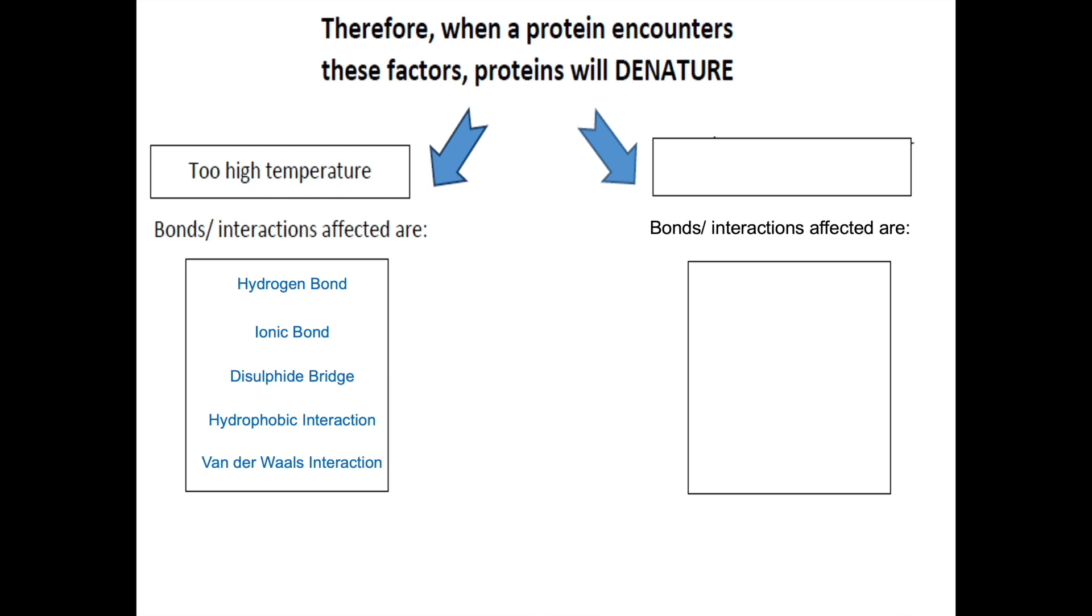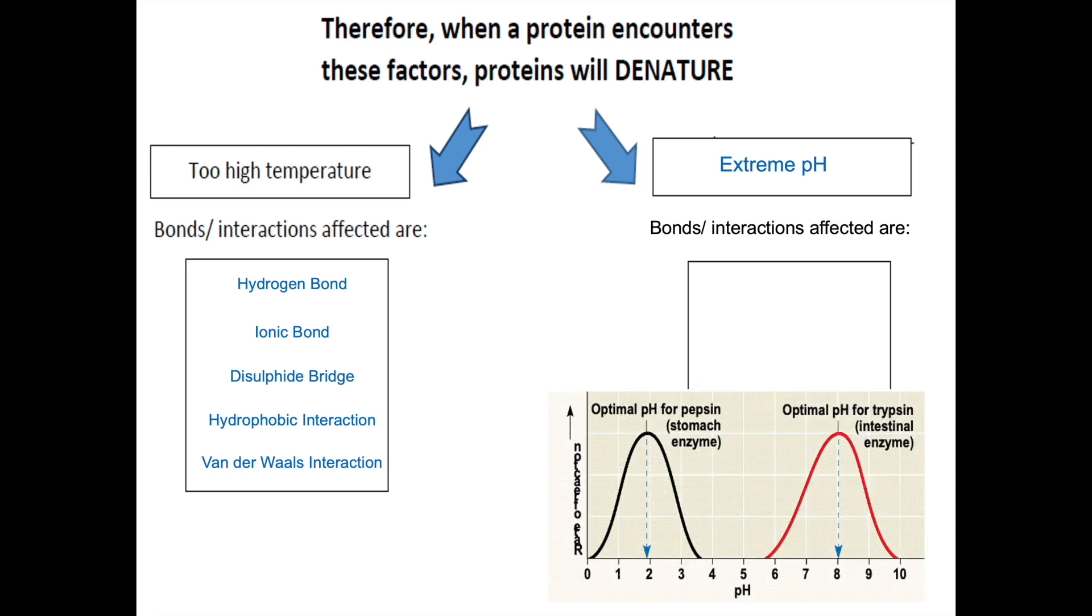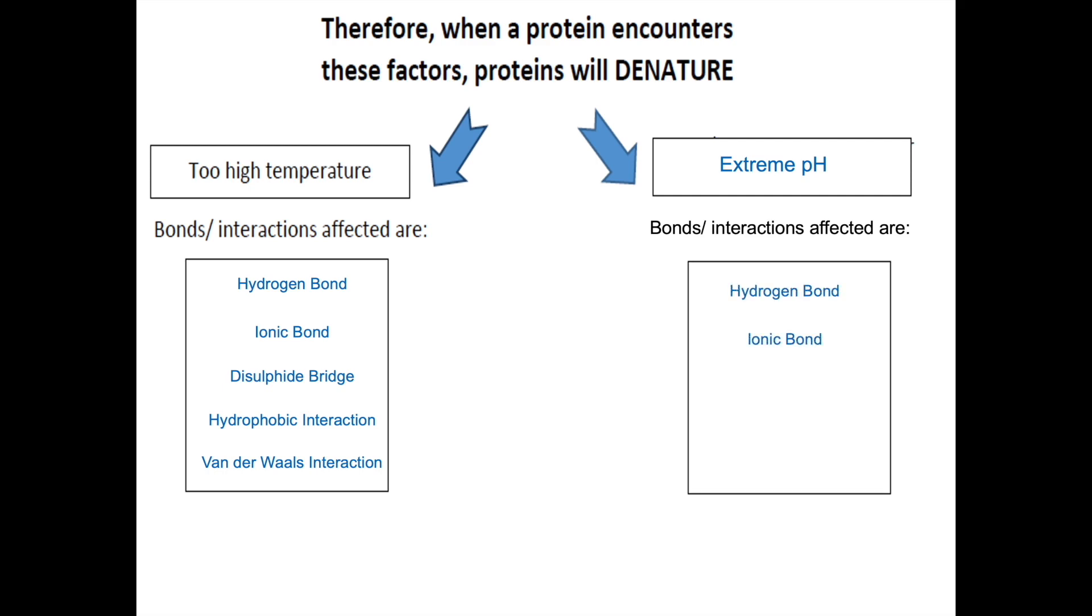The other factor that will cause protein to denature is extreme pH. From what we have learned during secondary school, we know that proteins have a very narrow pH range in which it can work at its best. This is because there is different concentration of H+ and OH- at different pH, thus affecting the hydrogen bond and ionic bond that holds protein in its shape. Once these two interactions are affected by changing pH, the protein will lose its conformation and therefore loses its function.